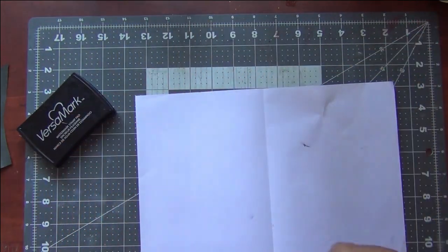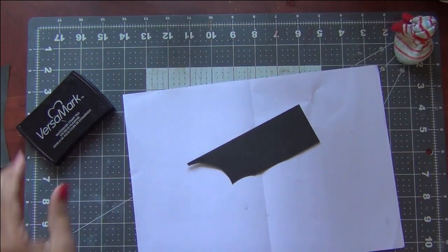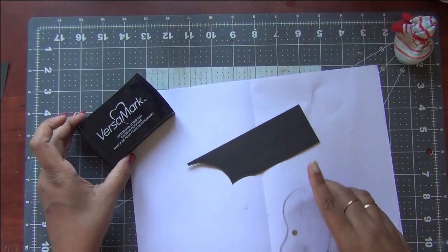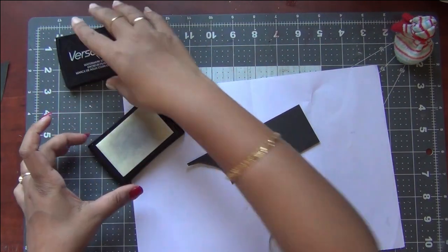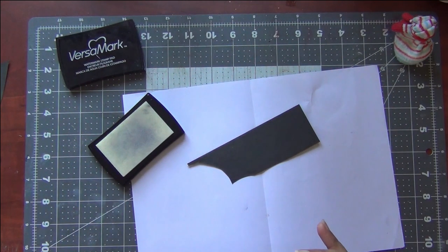And now I am stamping it with a sentiment. To check if this is really working, I chose a very fine sentiment to know if the anti-static pouch is really working. So I am stamping the sentiment with some Versamark ink.